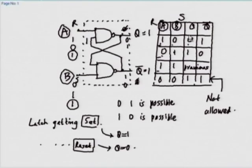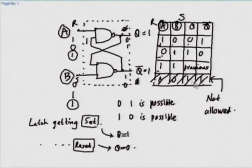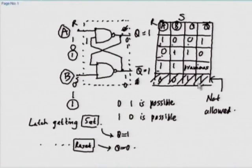Instead of just writing R and S at the beginning, it is always better to call them arbitrary names A and B and show that A must indeed be R and B must indeed be S. That is much more satisfying from the student's perspective, rather than just giving a magic table. It is better to derive that table from first principles. Two important points: 1,1 input gives you the previous state, and 0,0 is not allowed.